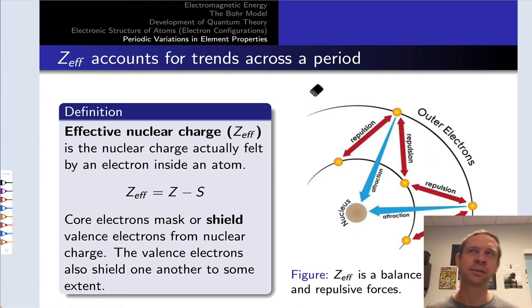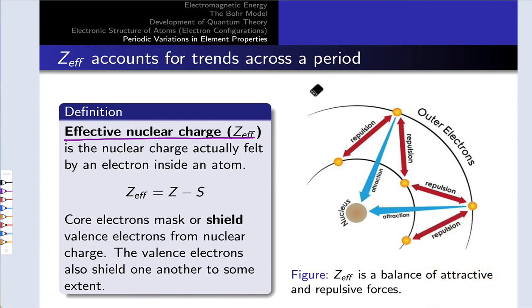Between the valence electrons and the positively charged nucleus are multiple layers in many cases of core electrons that repel the valence electrons. For that reason, the valence electrons don't feel the full nuclear charge. They feel a smaller amount of charge that we call the effective nuclear charge or Z-effective. Z-effective is a balance of the nuclear charge Z and repulsion of the core electrons with the valence electrons, which decreases that magnitude of positive attractive charge felt by the valence electrons.